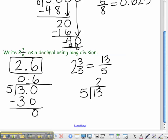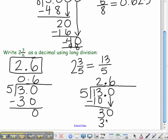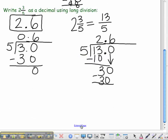5 goes into 13 two times. Bring up the decimal point. 5 times 2 is 10. Subtract, you get 3. Bring down a 0. 5 divides into 30, 6 times. 6 times 5 is 30. Subtract, and you get a remainder of 0.